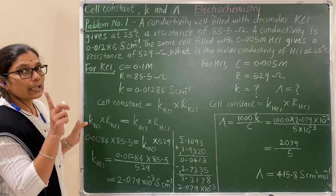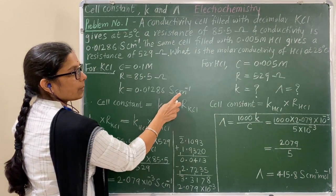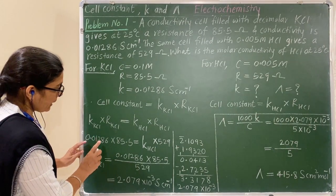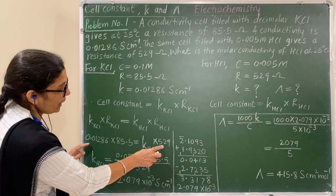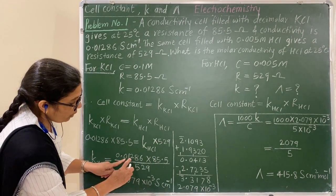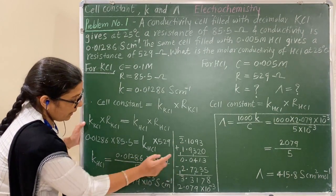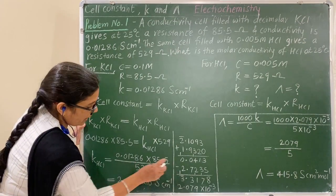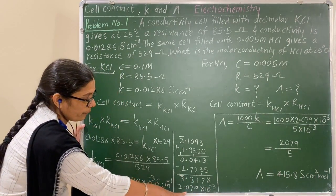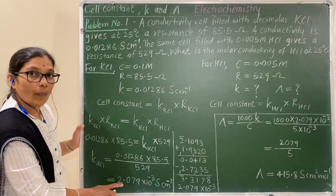The values are given. Note the units — conductivity is in Siemens per centimeter, and resistance is in ohms. Using logarithms: take the log of each value, add the logs of KCL conductivity and resistance, then subtract the log of SCL resistance. The antilog of this result gives the conductivity of SCL.